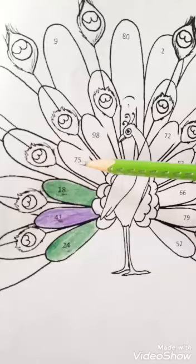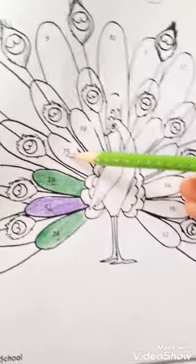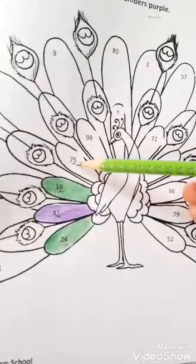Now come on the next number. Next number is 75. And 5 is an odd number. We will color it purple.